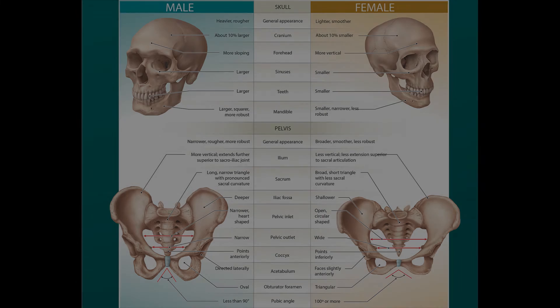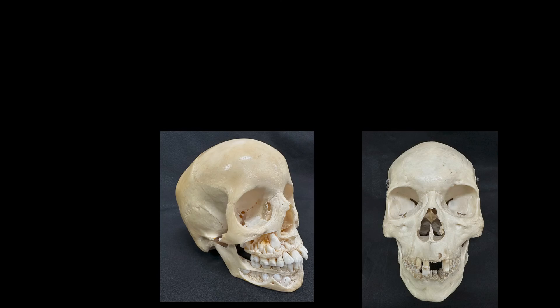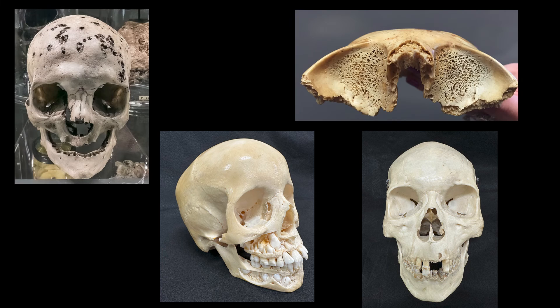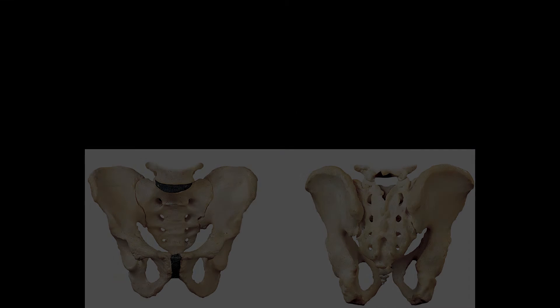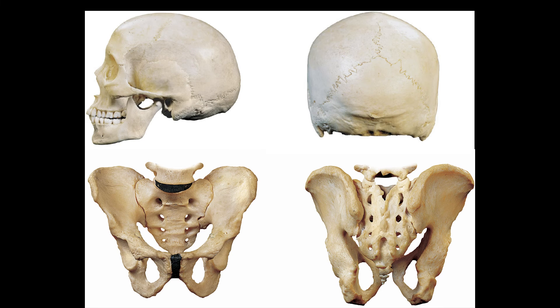In summary, biological sex, as well as the age and health status of an adult skeleton, can be determined by carefully examining a variety of bony markings, with first the pelvis and then the skull providing the most reliable clues.